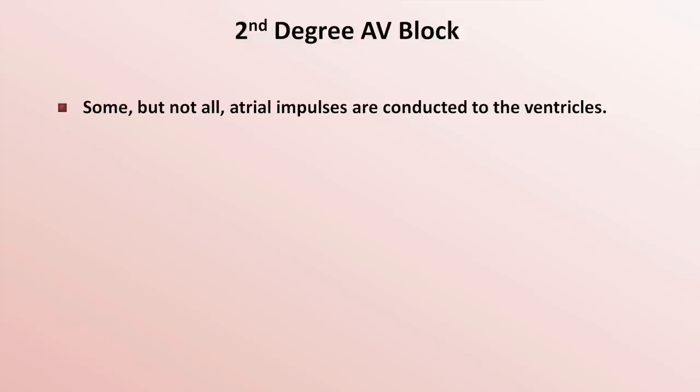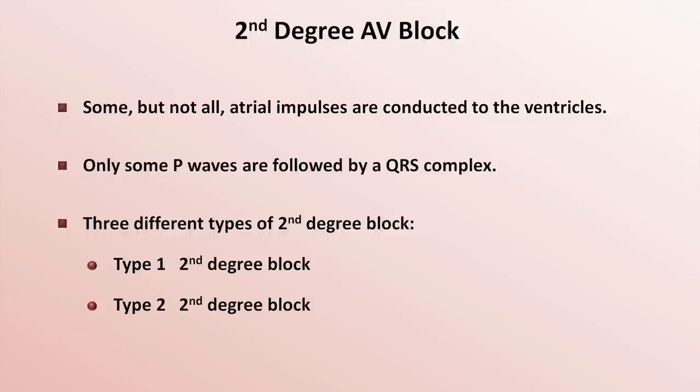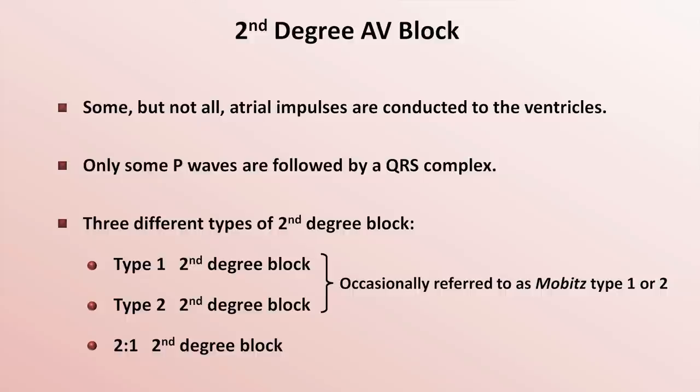In second degree block, some but not all atrial impulses are conducted to the ventricles. Therefore, only some P waves are followed by a QRS complex. The three different types of second degree block are designated type 1, type 2, and the less familiar 2-to-1 second degree block. Although I'm not a fan of this terminology, the first two are occasionally referred to as Mobitz type 1 or Mobitz type 2. Use of the qualifier Mobitz is completely superfluous, as there is no such thing as non-Mobitz type 1 or 2.